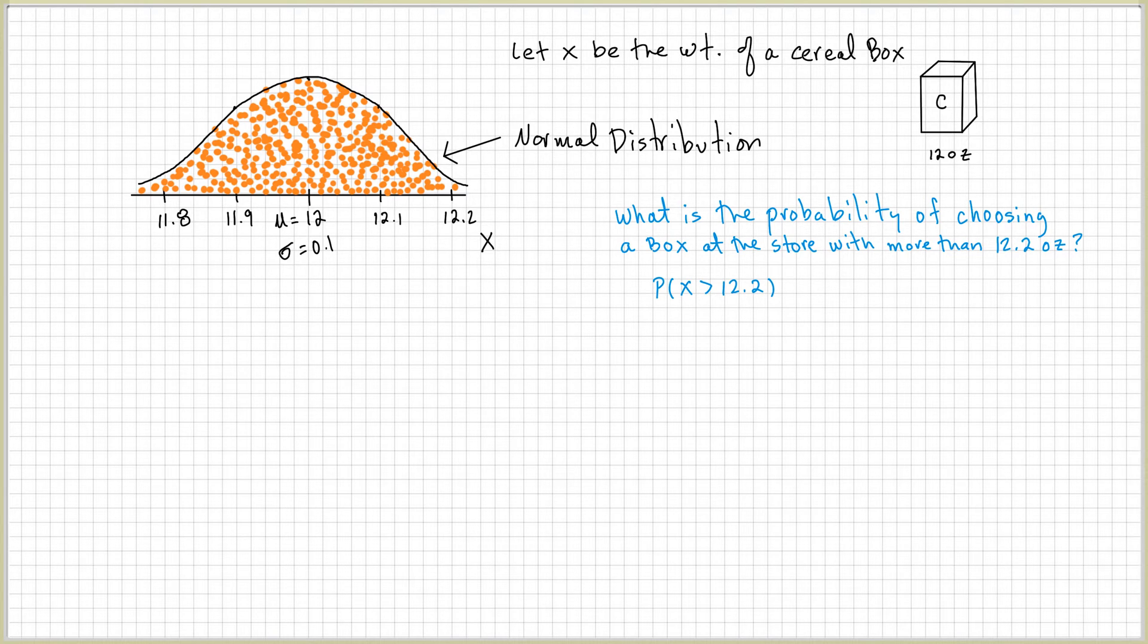As a matter of fact, very quickly, if you wanted to find the probability of the weight of the box that's between 11.9 to 12.1, which is from here to here, well, that's going to be approximately 68%.